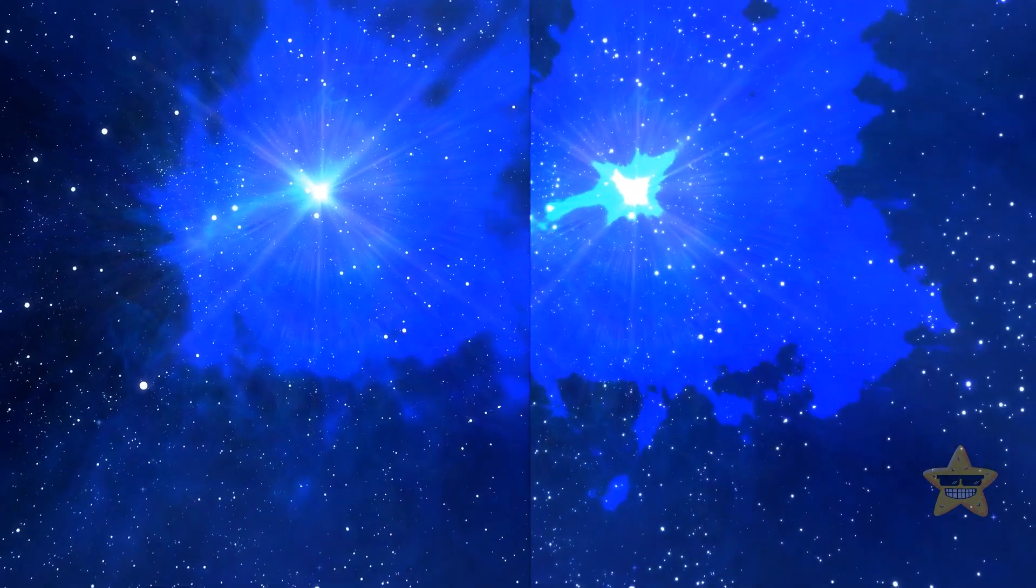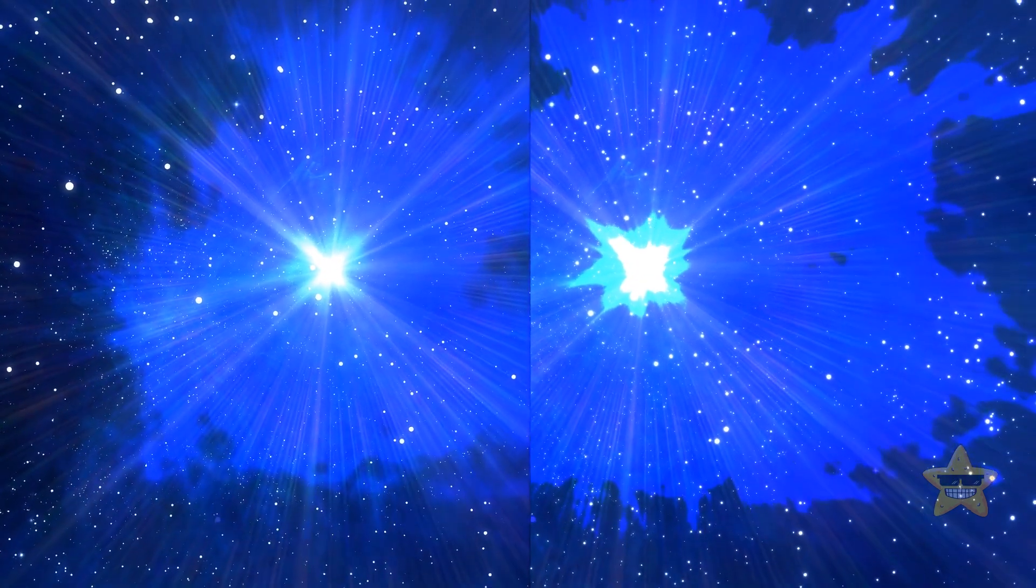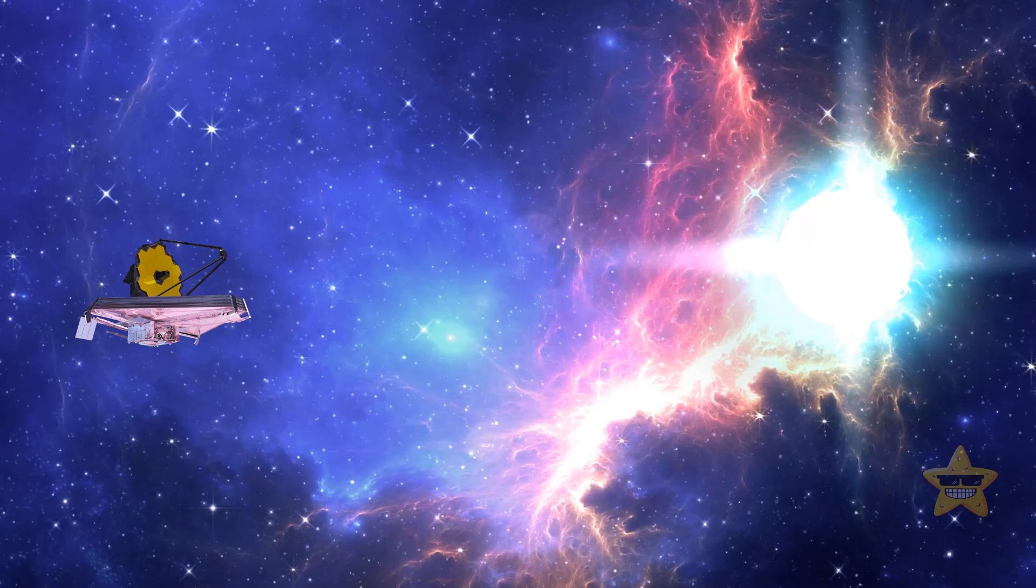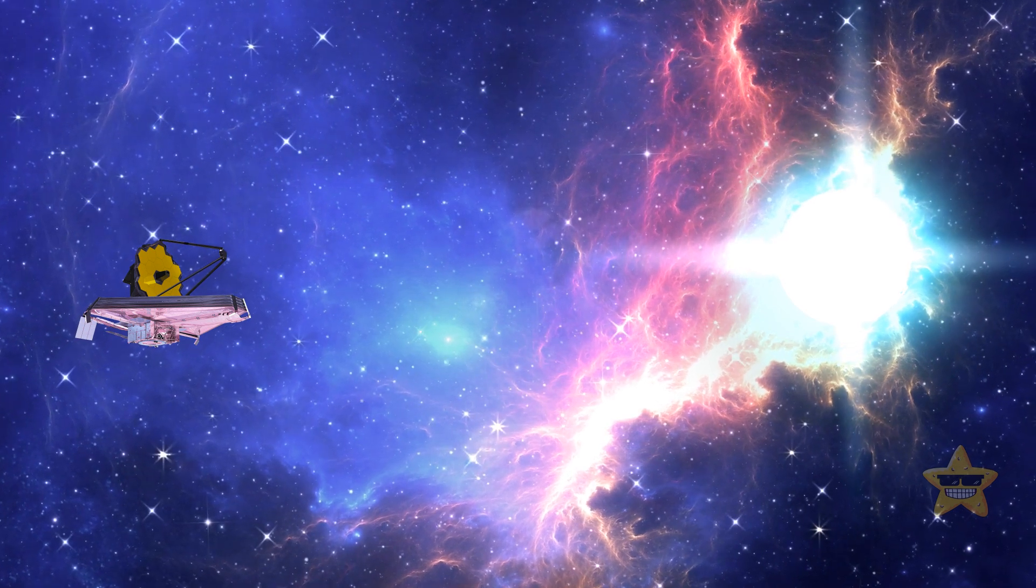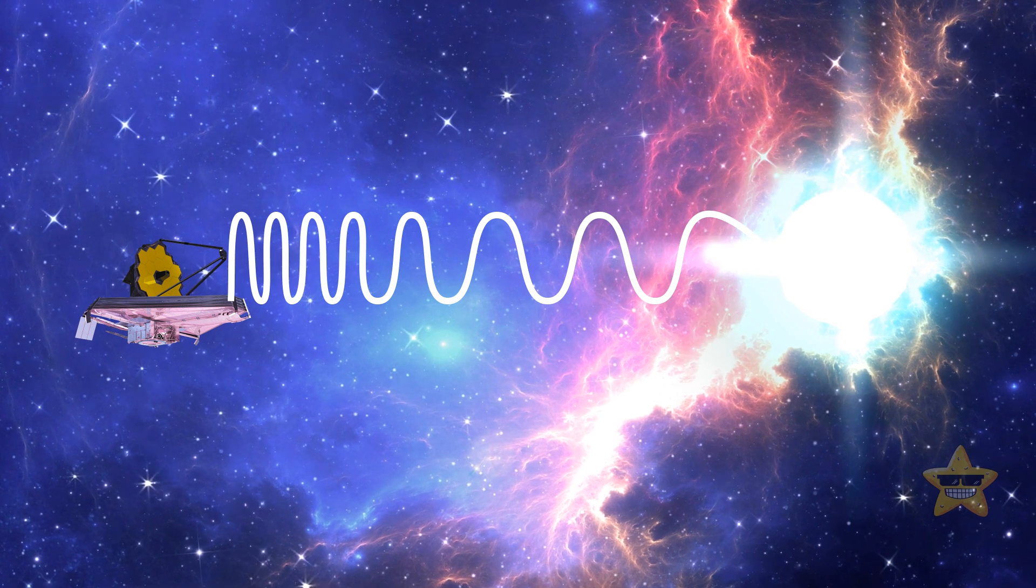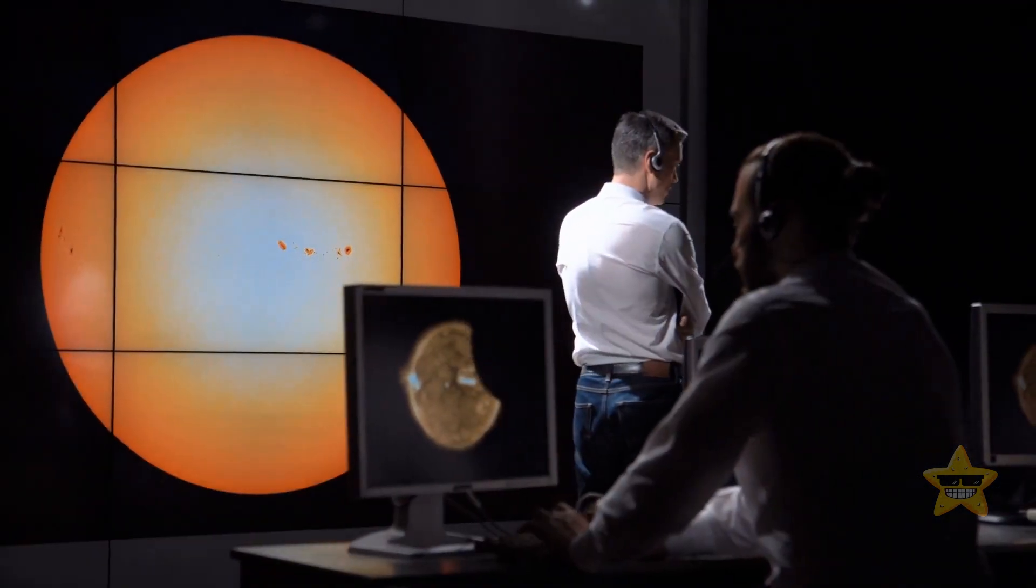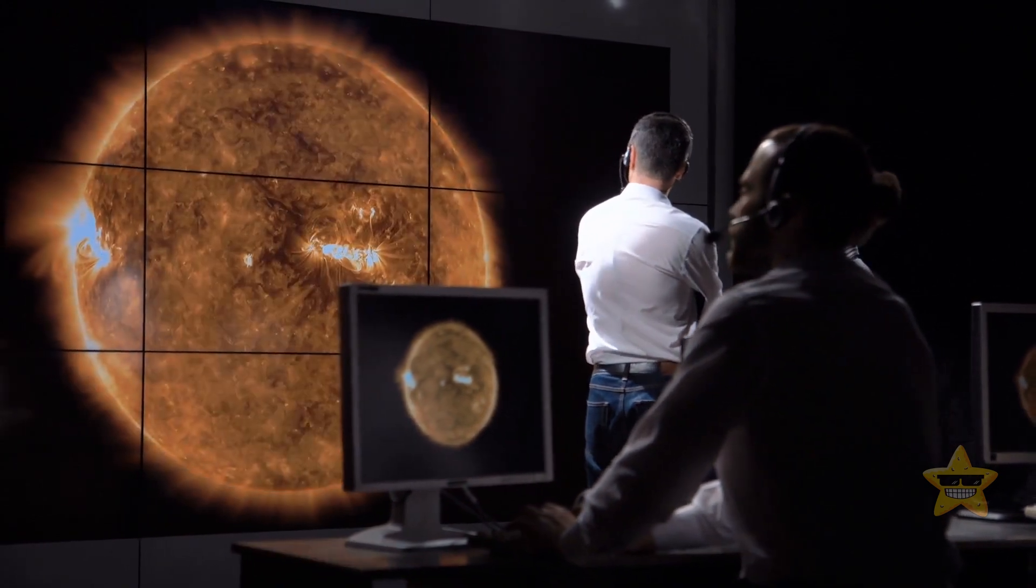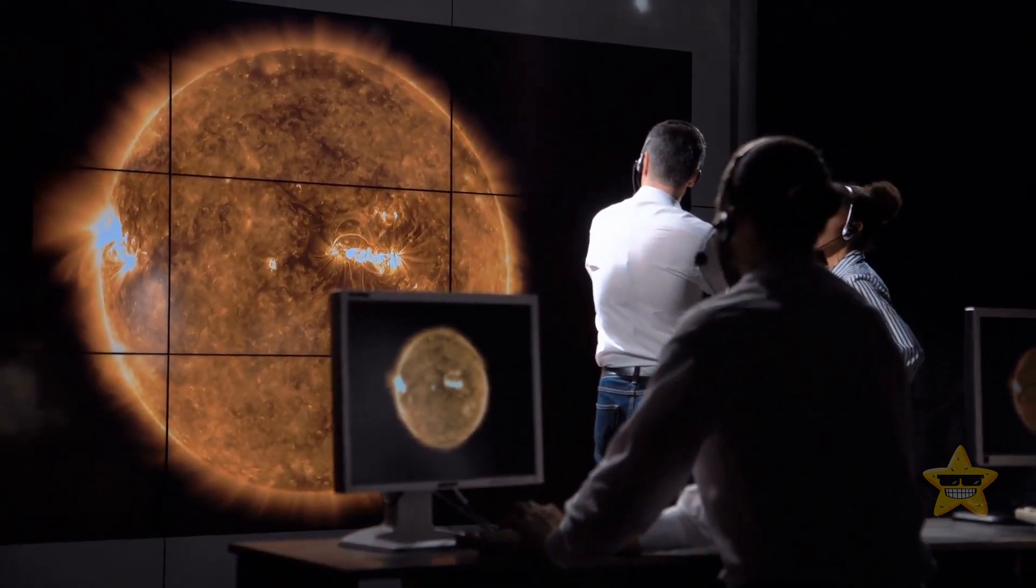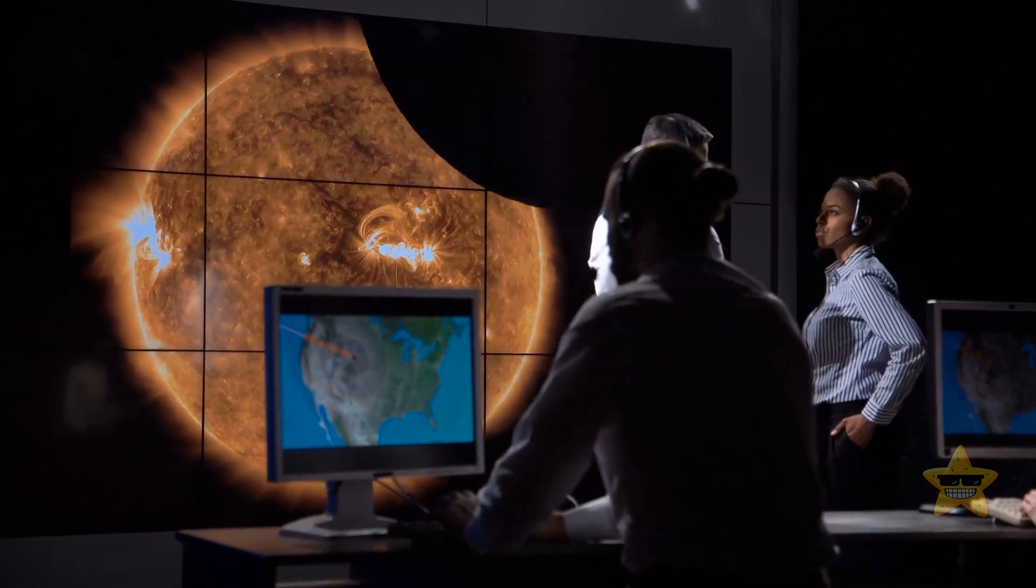Then, they compare how bright these supernovae appear and how bright they really are, and it helps figure out how far away they are. Researchers also measure something known as red shift – the increase in the wavelength of a supernova's light as it moves farther away. And then, by comparing the red shift and the distance to the supernova, scientists can measure the rate of expansion that has been changing over the history of the universe.